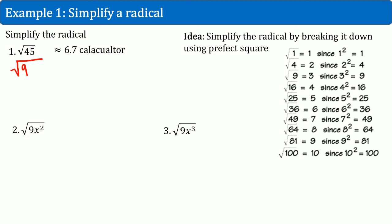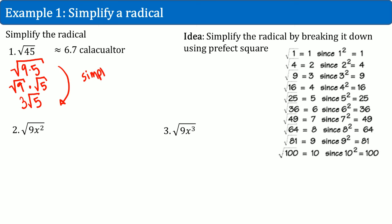So it would be the square root of 9 times 5. Then we split this up individually: square root of 9 times square root of 5. We know the square root of 9 equals 3, so we write 3. Nothing happens to the square root of 5 because it's a prime number, so we leave it as square root of 5. This process is simplification — the number inside the radical was 45 and now it became 5. The number inside the radical gets reduced to a lower value.